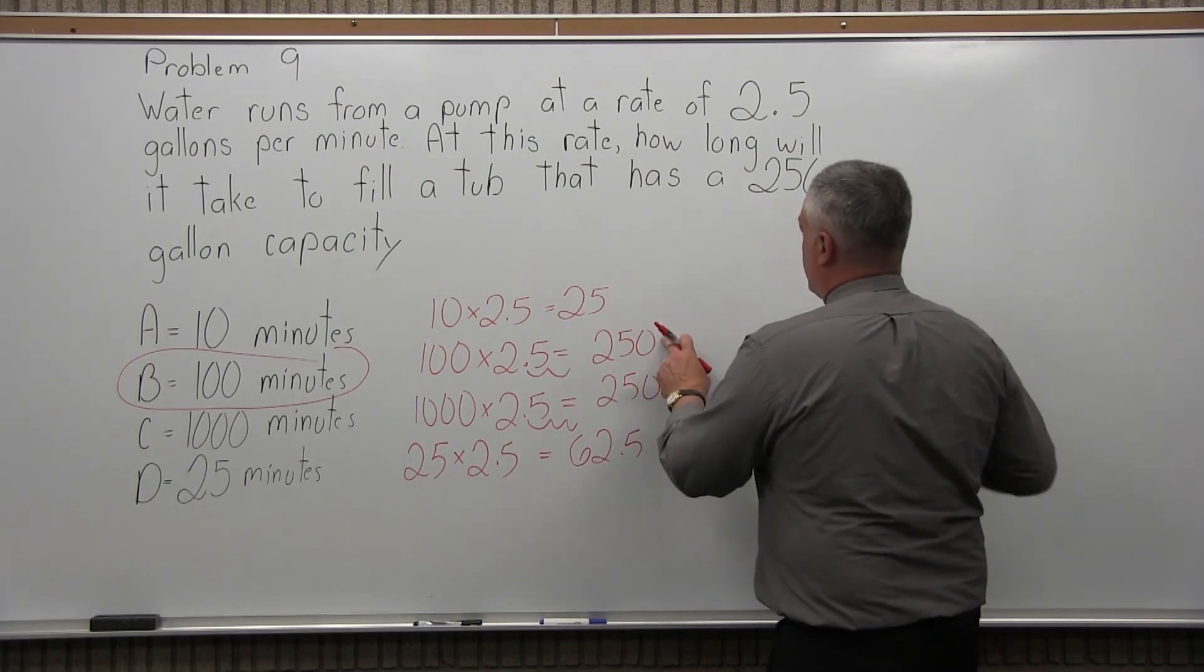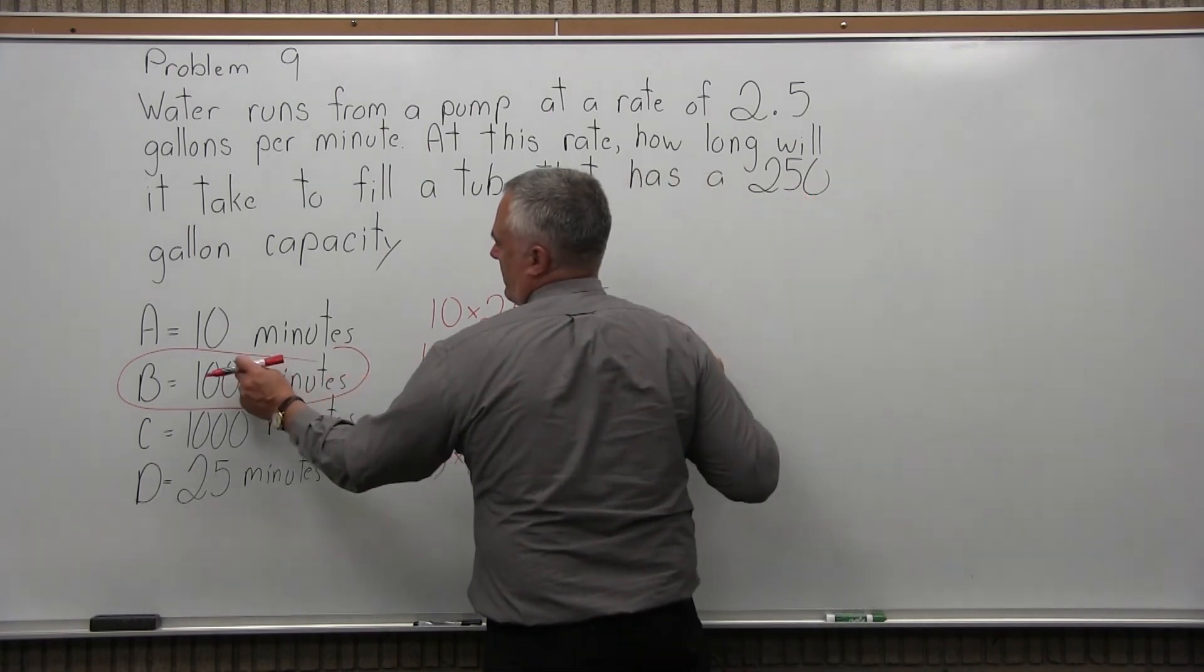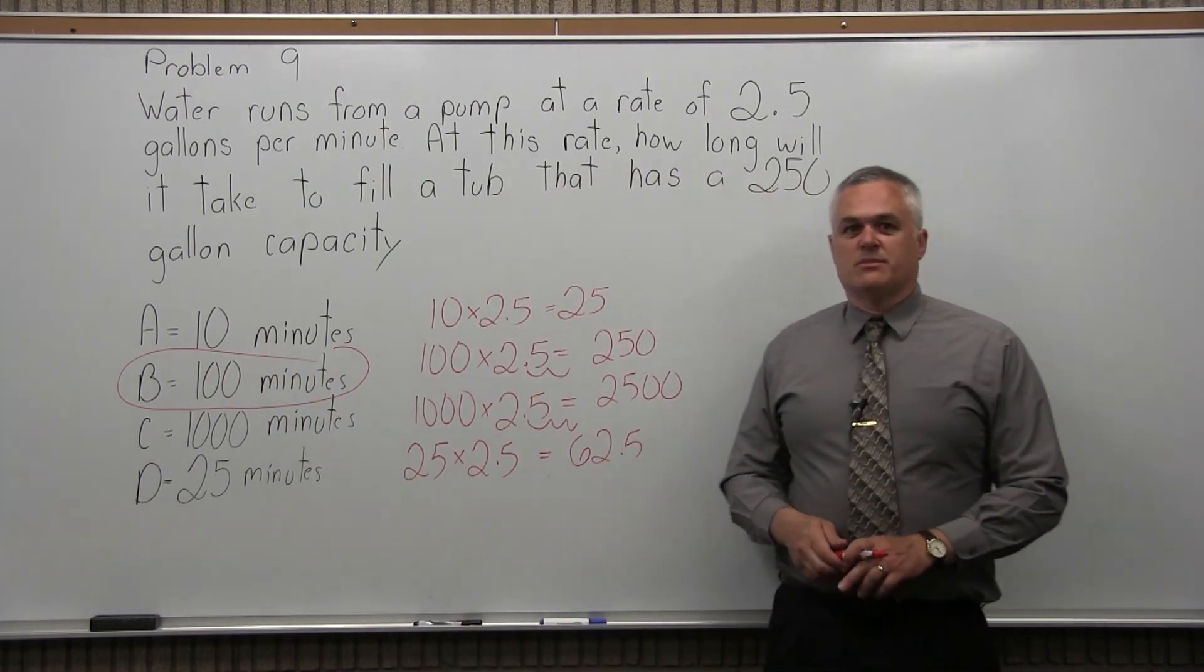So the question says this tub has a 250 gallon capacity. You get 250 gallons of water if the pump runs for 100 minutes. So the answer to problem 9 is option B.